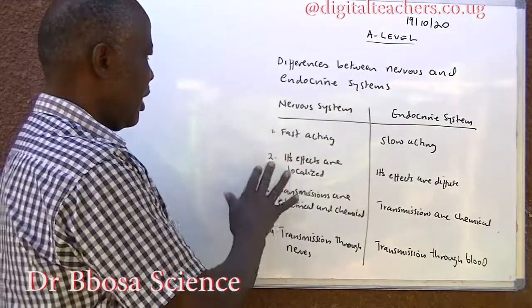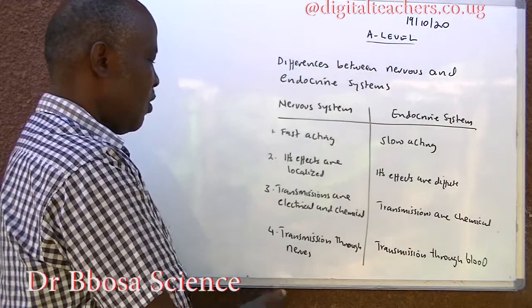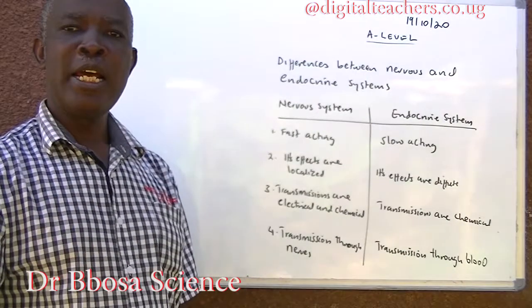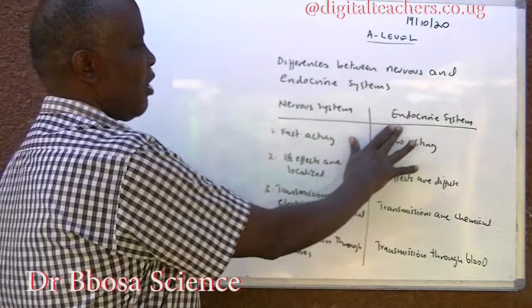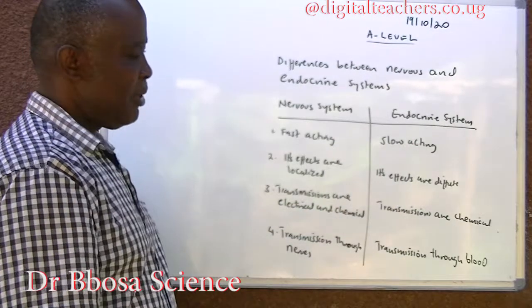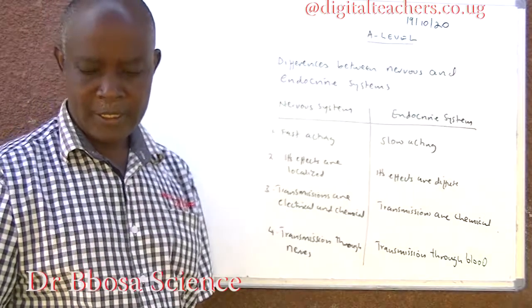In the nervous system, transmission is through nerves. In the endocrine system, transmission is through blood.